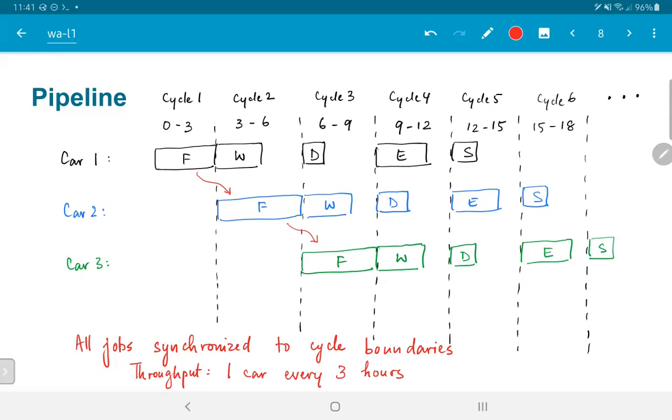He does not really need to know exactly when technician one finished. He just knows that at the start of a cycle, there will be a car ready for him to start attaching wheels to. The same way, the third technician can just start at the beginning of each cycle and attach doors to the car that is in front of him. In this way, all the jobs are synchronized to cycle boundaries.